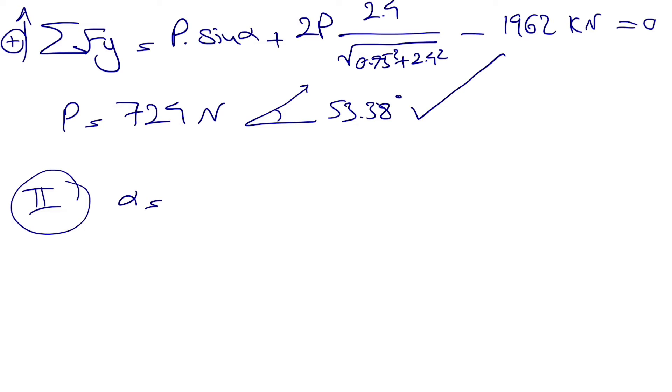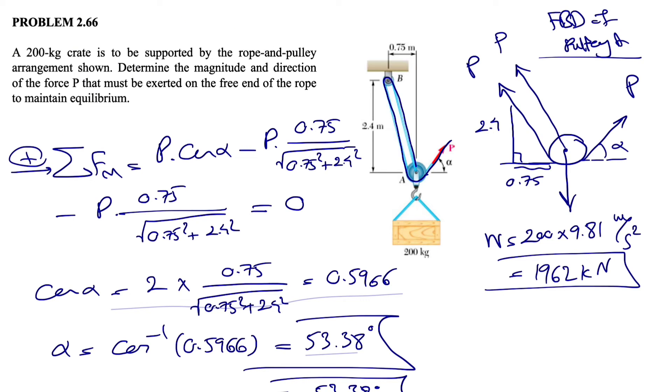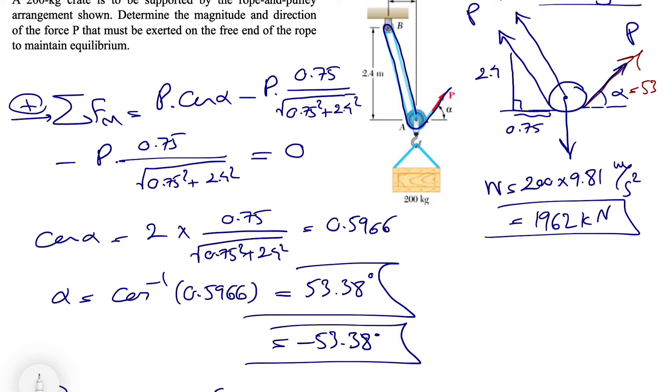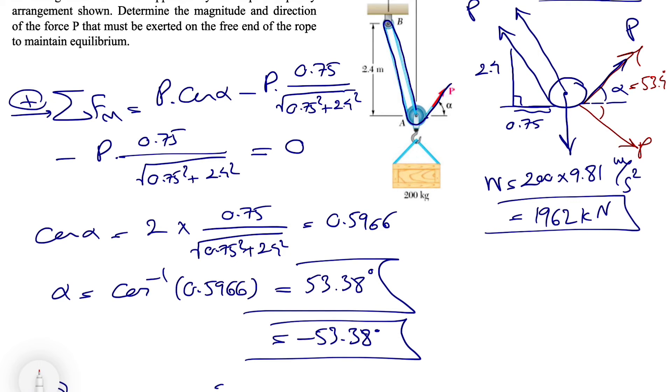As we mentioned, the angle will be the positive angle that we have. So in the second condition we'll have alpha this time minus 53.38, which means this force P in here can be here, can be also either. I'm going to show it in red. So we solved it for this alpha which was 53.4.